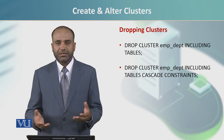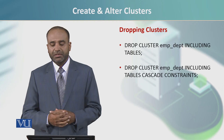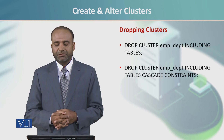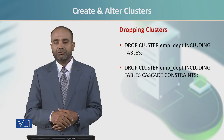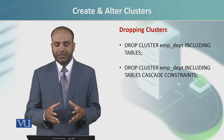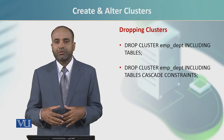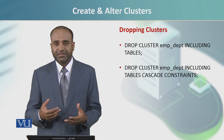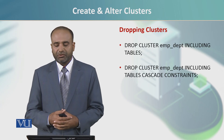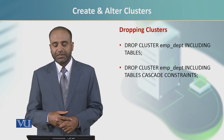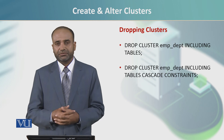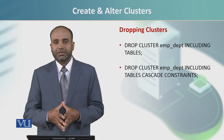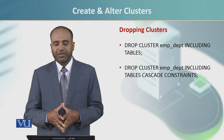Dropping a cluster works similarly to dropping a table. We can run the drop command on a cluster like emp_depth. If we don't write including tables, we get an error message. So the syntax is: drop cluster, cluster name, including tables, cascade constraints. The cascade constraints option handles parent and child relationship issues within the table. This is how we can drop the cluster with the cascade option and the including tables option.